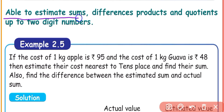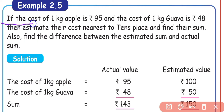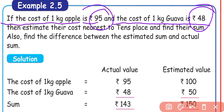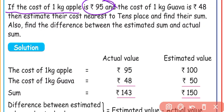Next, we learn to estimate sums, differences, products and quotients up to 2-digit numbers. Example 2.5: The cost of 1 kg of apples is Rs. 95 and the cost of 1 kg of guava is Rs. 48. Estimate their costs to the nearest tens place, find their sum, and also find the difference between the estimated sum and the actual sum.